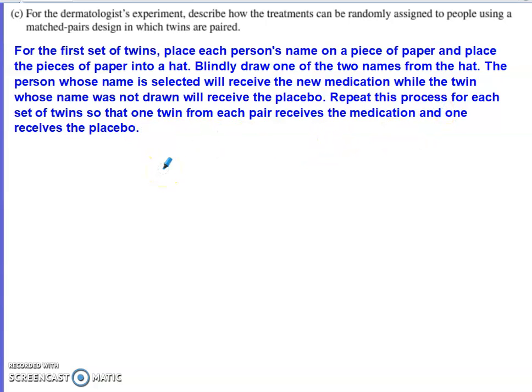This is not the only way to satisfy Part C's requirements. If using a random number generator, random list of digits, or coin flips, those are valid options but require more detailed description than the hat method. The hat method is the quickest, most efficient way to describe randomizing treatment assignments. That covers problem number two from the 2022 AP Statistics exam.